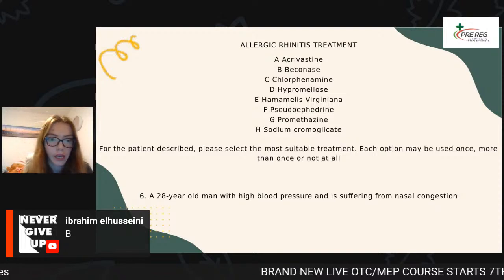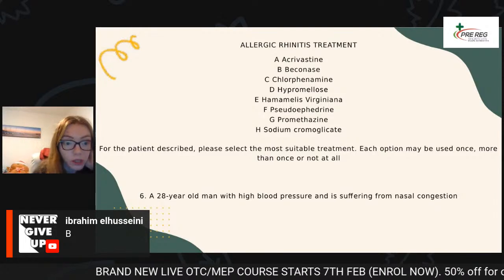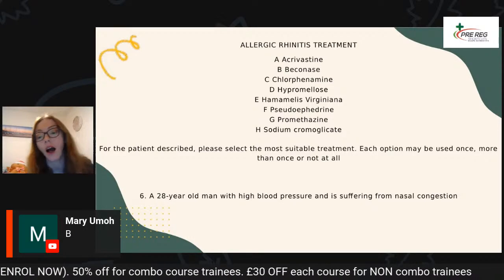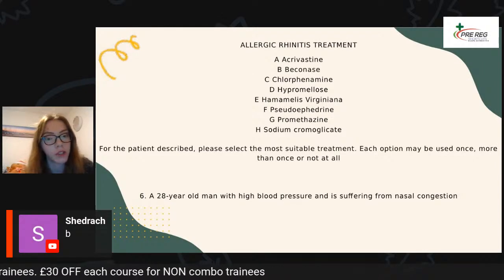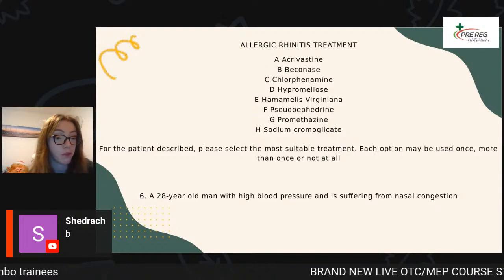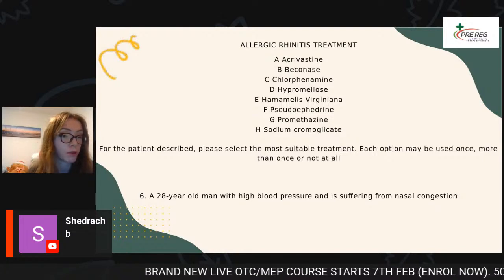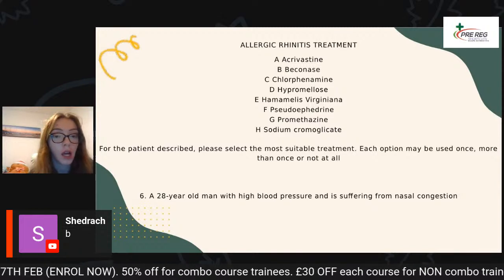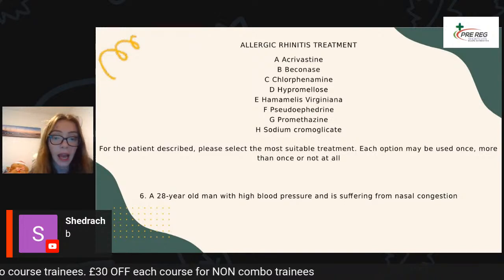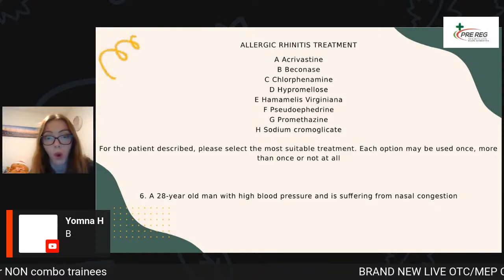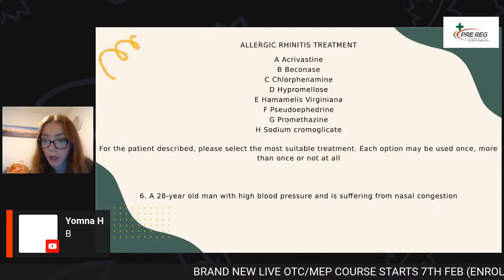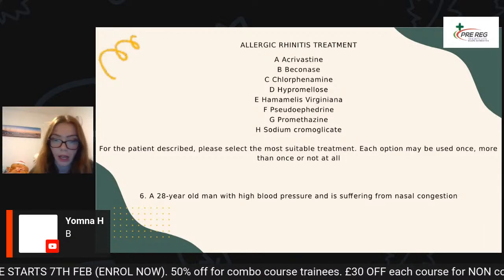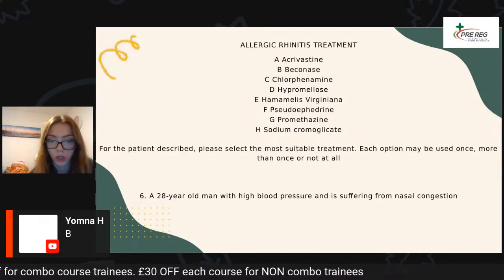B is the correct answer here. The key part is that we have a 28-year-old male patient who has high blood pressure. We said earlier that pseudoephedrine is cautioned with patients with high blood pressure — it's actually best to be avoided just to be on the safe side, because we don't want to be making that patient's blood pressure any higher. Beconase is a nasal spray that can be used for nasal congestion, can be sold to those over the age of 18, and that's going to be the best option for this patient.